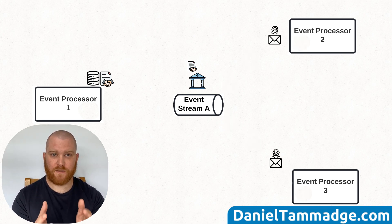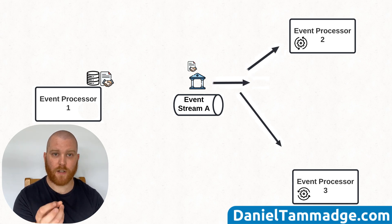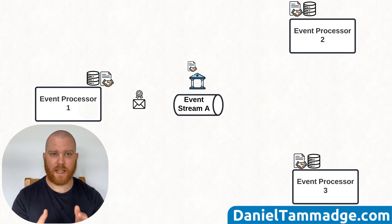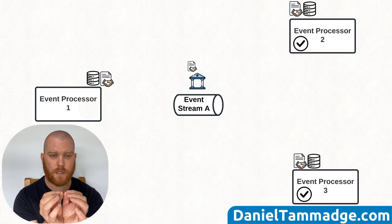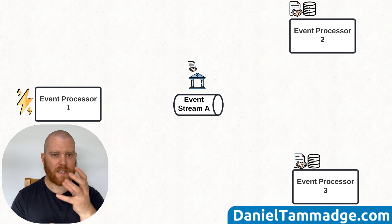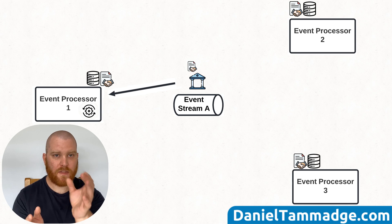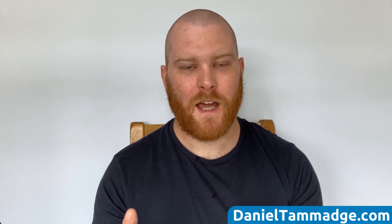So when the consumer receives the event, it will look up the schema from the registry — or again, ideally from a local cache for performance reasons — and deserialize the event. This means that if the producer makes a change to its event payload, when it validates the schema against the registry, the publisher will know if it's not valid, thus preventing the event from being published. Go ahead and smash that like button, click that subscribe button, and let me know in the comments below if you're using schema registries in your event-driven architecture and what you have found while using them.